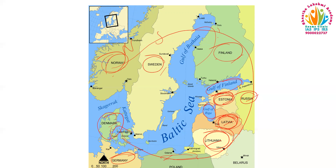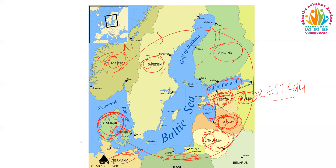NSF: Norway, Sweden, Finland. Then Rest Lali: Russia, Estonia, Latvia, Lithuania. Then Poje: Poland, Germany. And Den: Denmark. These are the first letters of the words to help you remember. All in clockwise order.